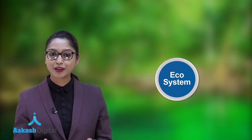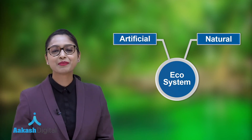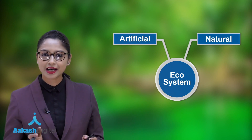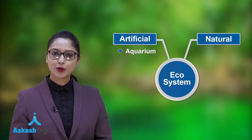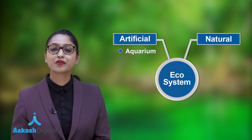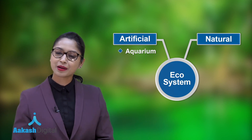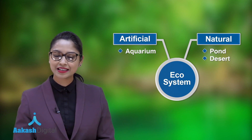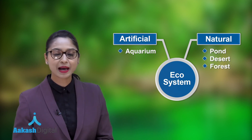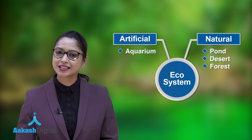We also categorize ecosystem on the basis of whether they are natural or artificial. As we discussed in the last chapter, aquarium and crop field come under artificial ecosystem as they will perish without human assistance. But a natural ecosystem is self-sustainable and self-regulating — for example, a pond, a desert, a forest. They do not need human assistance for survival.